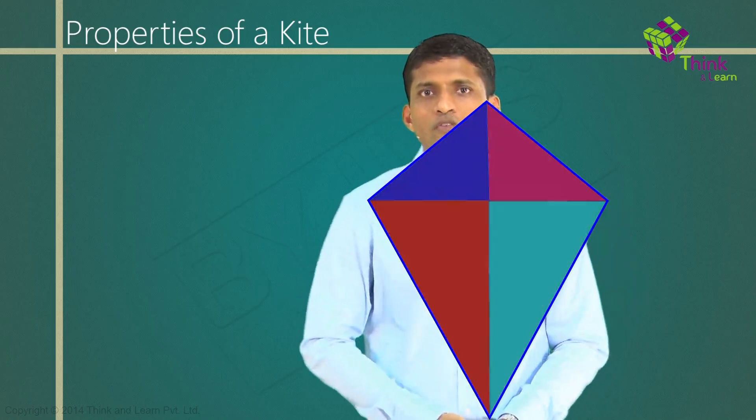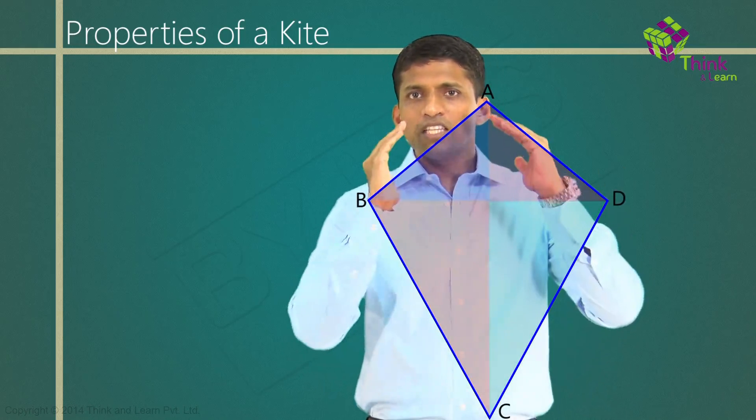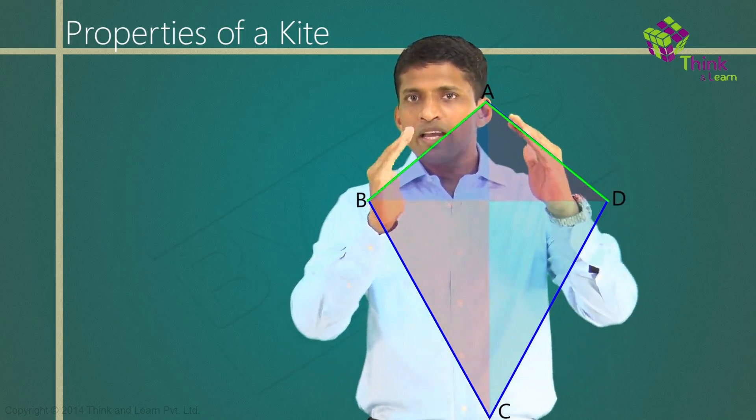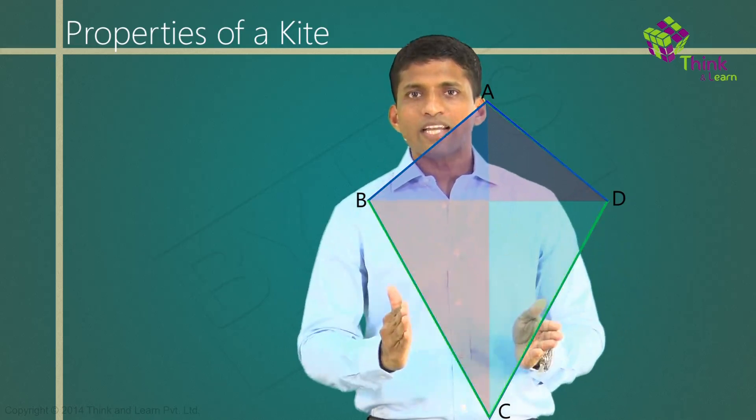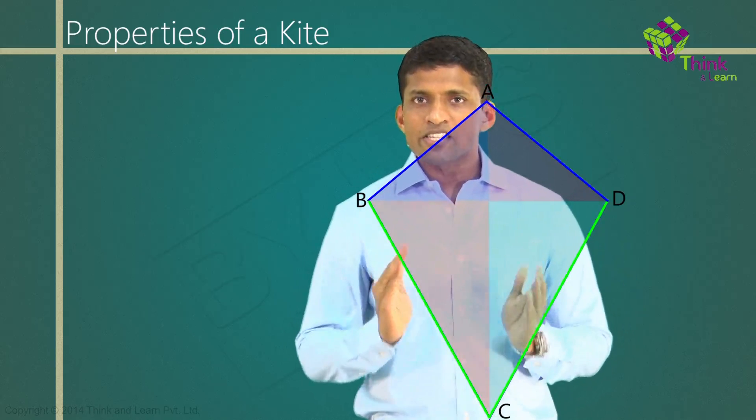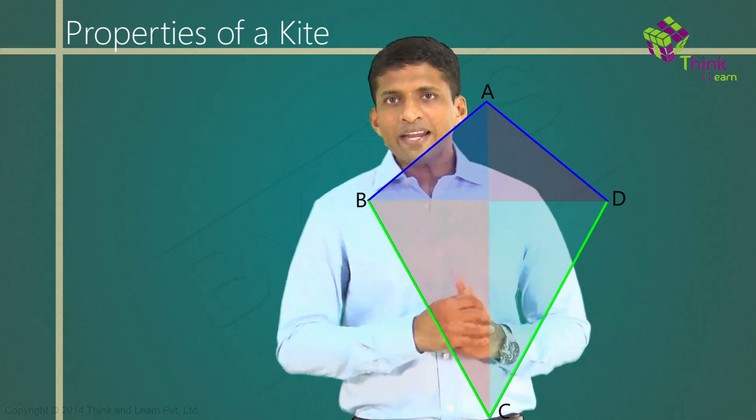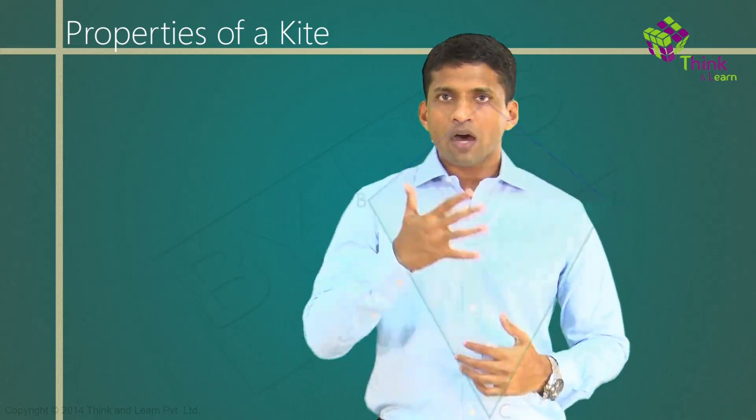That is, just to show that in a diagram, if I show you a kite like this, which is ABCD, these two sides are equal. That is, AB and AD are equal. And these two sides are equal, which is BC and CD are equal. So in a kite, adjacent sides are equal.